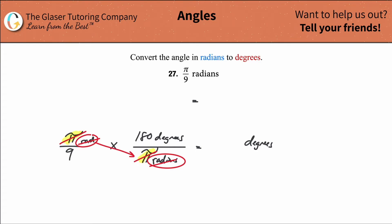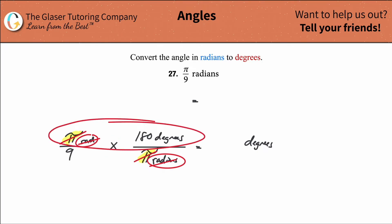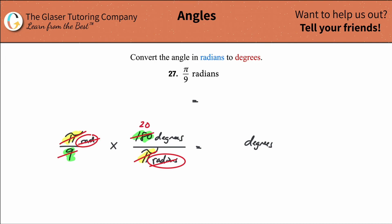A lot of times students might want to cross multiply here because they see two fractions, and that's understandable. But remember, you only cross multiply when there's an equal sign between the two. If it's multiplication, you just multiply straight across — there's no such thing as cross multiplication in that case. We also have a 9 and a 180. Can that be reduced? Sure — 9 goes into 180 about 20 times.